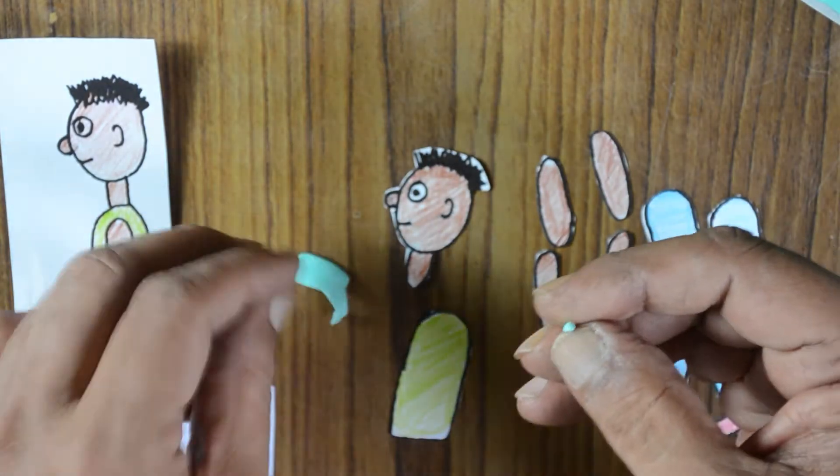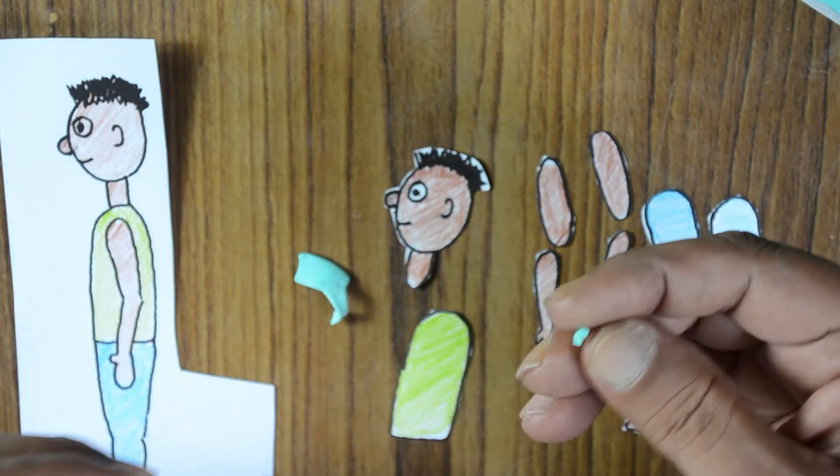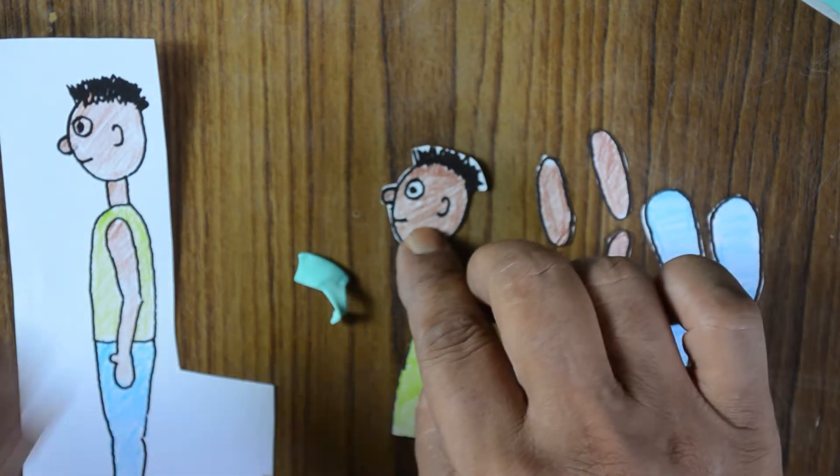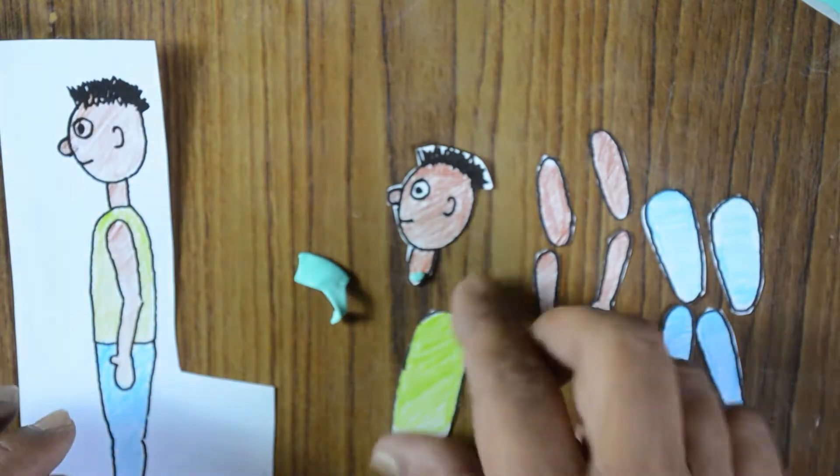Use very little balls of blue tack to assemble your character. Fix a small ball of blue tack to the neck and attach it to the back of the body.